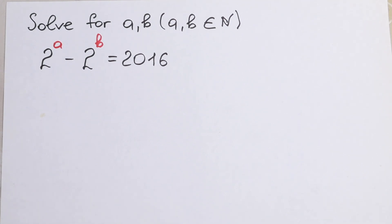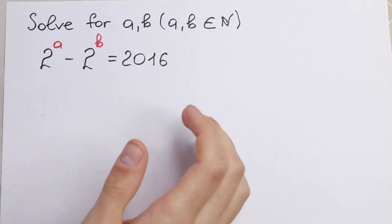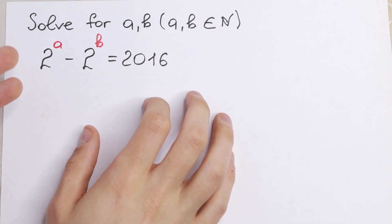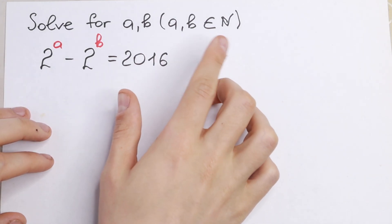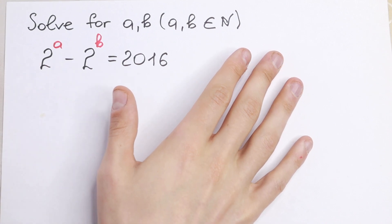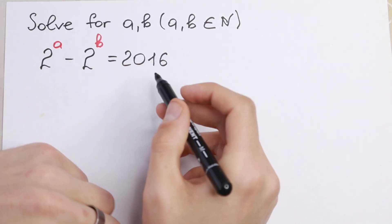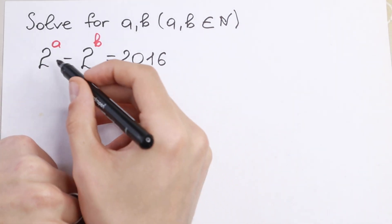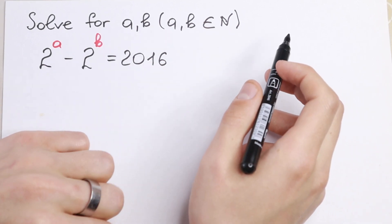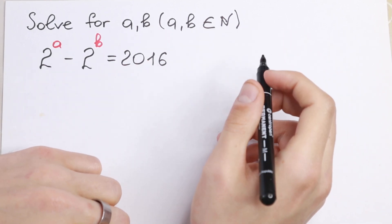Hello everyone and welcome back to my channel. In this video we are going to solve this interesting university exam. We need to solve this for A and B, where A and B are natural numbers. So 2 to the power A minus 2 to the power B equals 2016. I want to show you the best approach how I solve this kind of question.